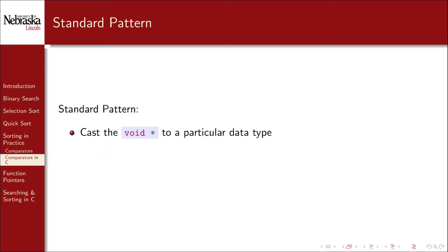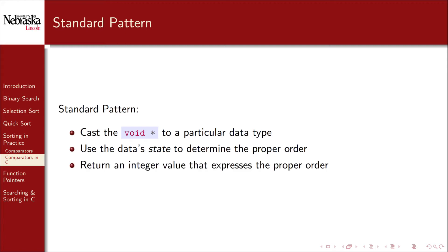There is a simple standard pattern to follow when writing comparators. The first step is to cast the generic void pointers to a particular type of data that you're comparing. You then use the data's state and value of its variables to determine the proper order. And you return an integer value — something negative, positive, or zero — that expresses the proper order of the elements.